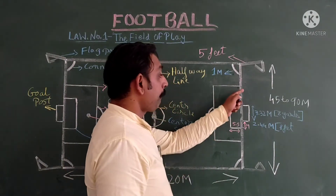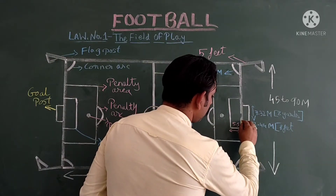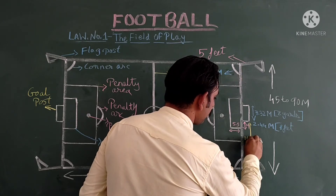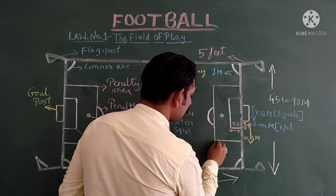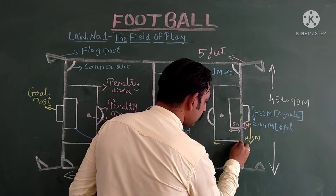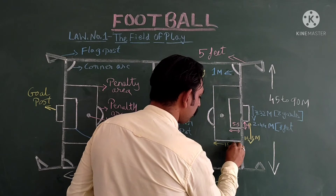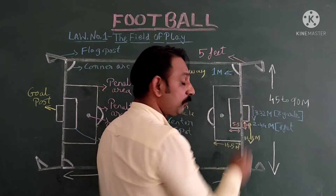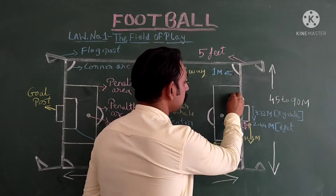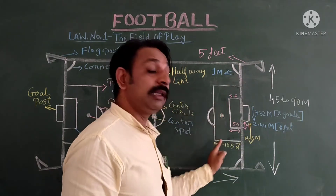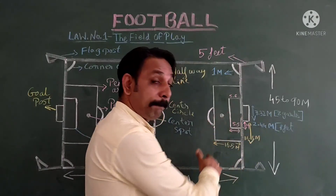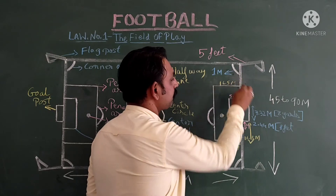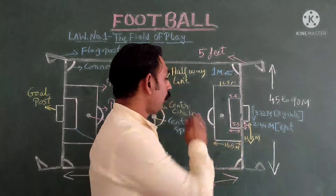Now let us know the penalty area measurement. From the goal post, it is 16.5 meters to each side, and then a parallel line is drawn opposite to the goal post to form the penalty area.